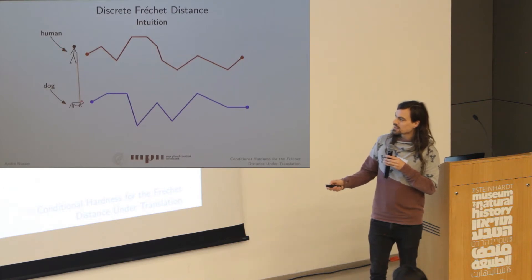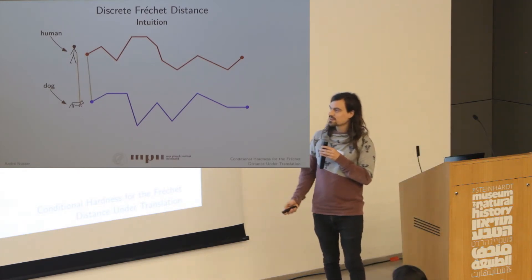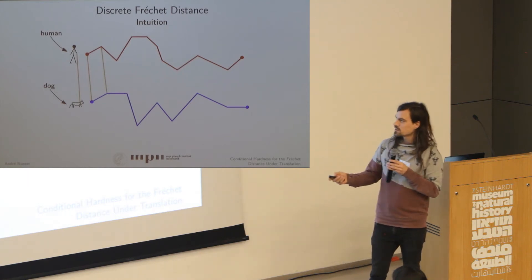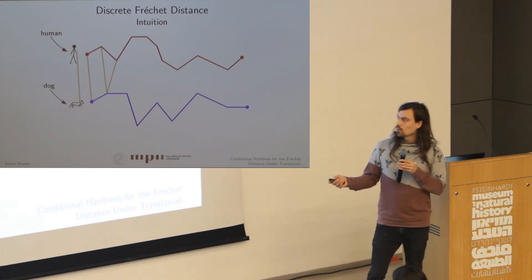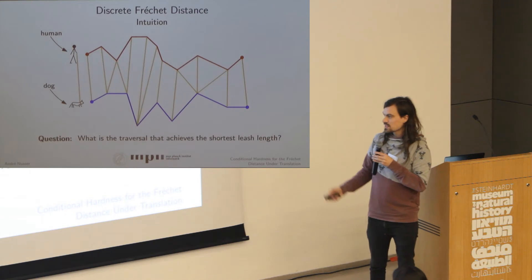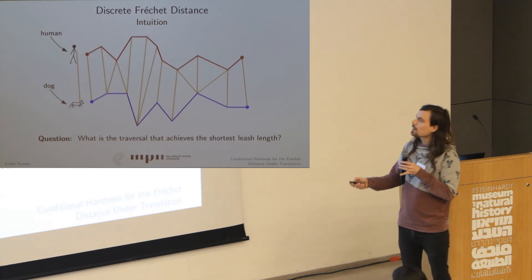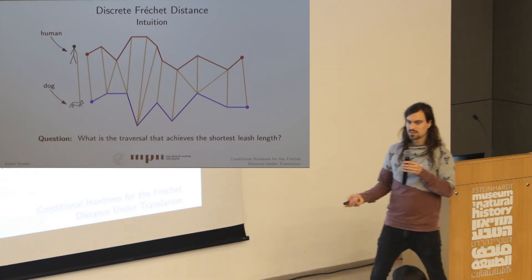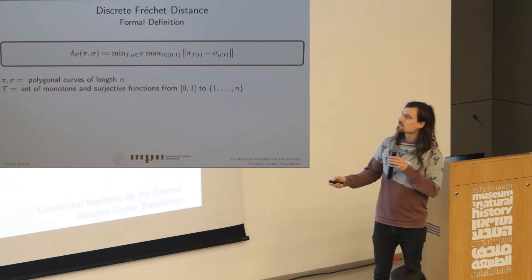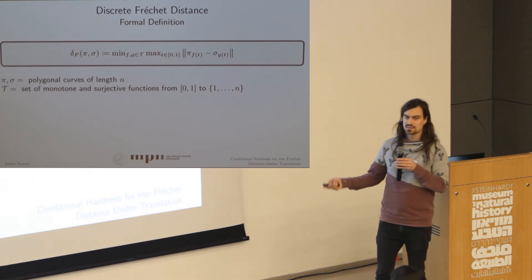I'll give the intuition of the Fréchet distance first. We have a human and a dog connected by a leash. The human walks along the red trajectory and the dog walks along the blue trajectory. They start at the first two nodes, and there are three possible movements: both jump to the next vertex, the human jumps to the next vertex, or the dog jumps to the next vertex. They traverse the whole trajectories until they end up in the last nodes. The Fréchet distance of two curves pi and sigma is the minimum over valid traversals of the maximum distance during the traversal — that's the leash length.